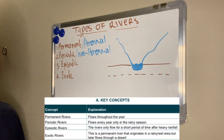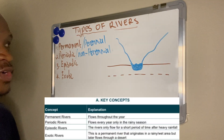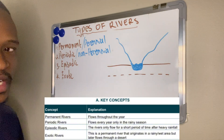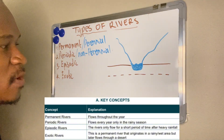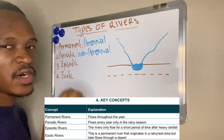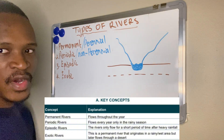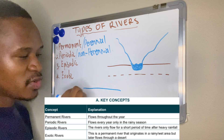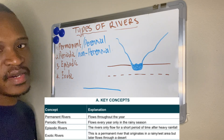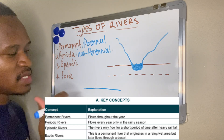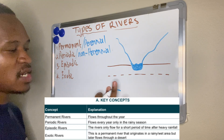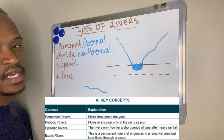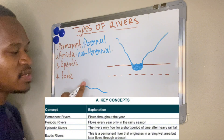Number one is the permanent river, also known as our perennial river. This is the river which flows throughout the year. On our map, we see it by having a solid blue line, which represents our perennial river on our maps.